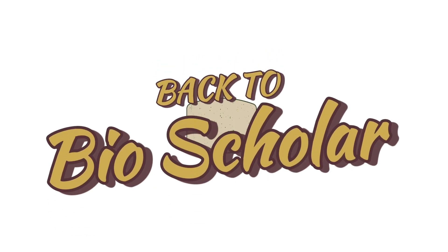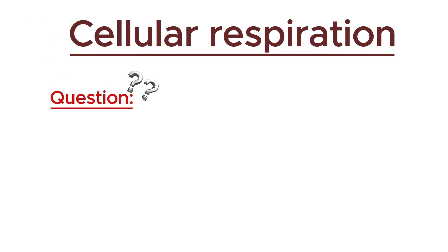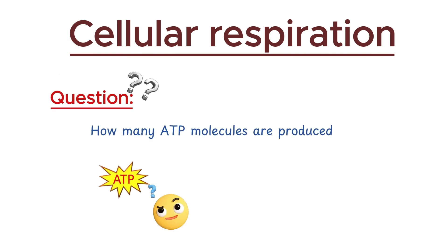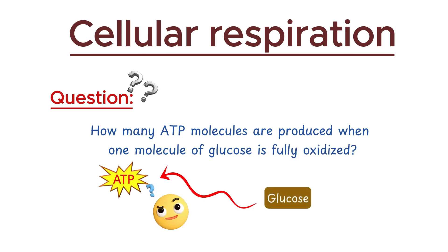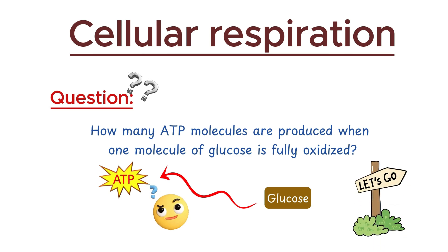Hello everyone, and welcome back to the final part of our series on cellular respiration. In this video, we'll be discussing the key question: how many ATP molecules are produced when one molecule of glucose is fully oxidized? Let's dive into the details and break down the steps of cellular respiration to understand this process.